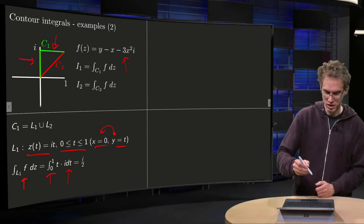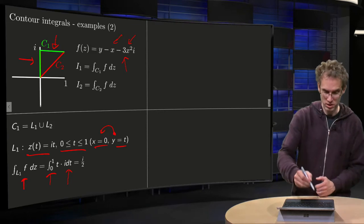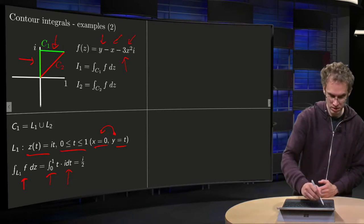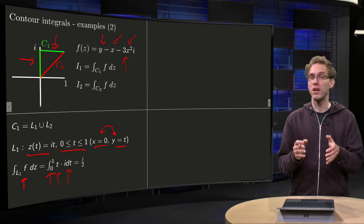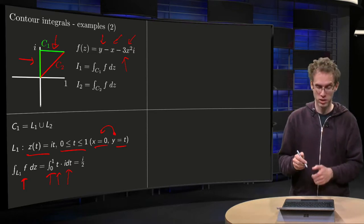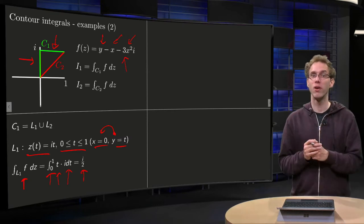So x equals 0, that's nice because that means those terms cancel out here, and y equals t means that you get a t over here. So the function you have to integrate is just t times i. So integrate, one-half t squared between the boundaries yields i over 2, so that's the integral along L1.